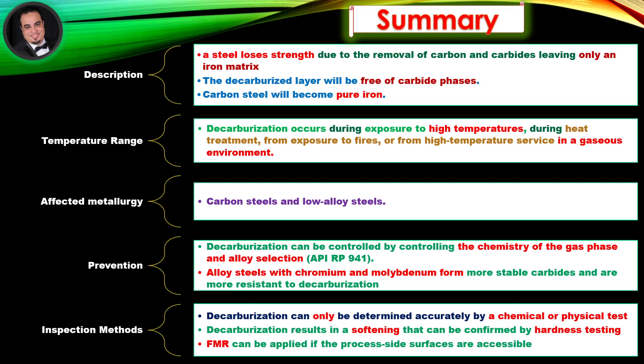Inspection methods: Decarburization can only be determined accurately by a chemical or physical test. Decarburization results in a softening that can be confirmed by hardness testing. Field metallographic replication can be applied if the process side surfaces are accessible.